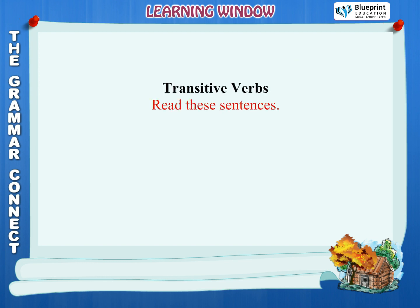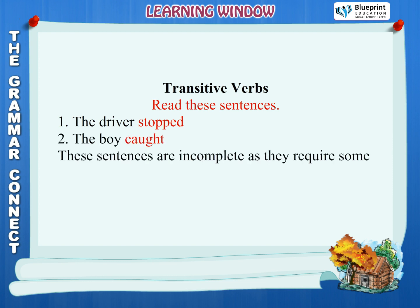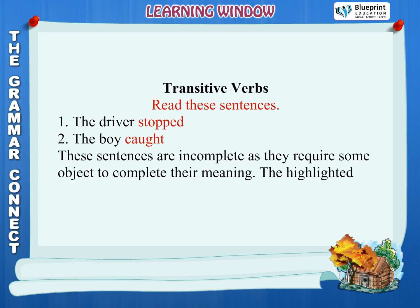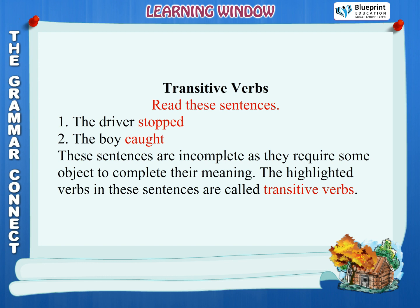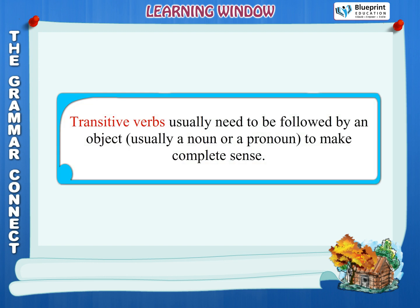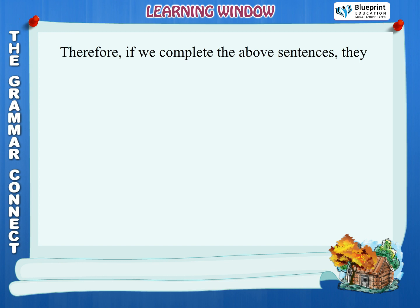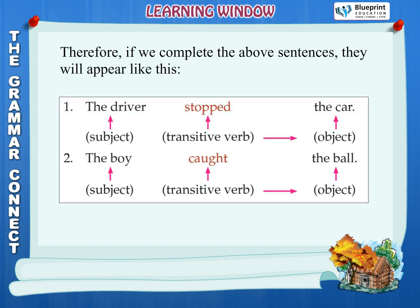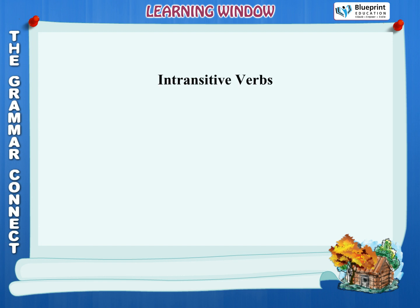Transitive verbs: Read these sentences — 1. The driver stopped. 2. The boy caught. These sentences are incomplete as they require some object to complete their meaning. The highlighted verbs in these sentences are called transitive verbs. Transitive verbs usually need to be followed by an object, usually a noun or a pronoun, to make complete sense. If we complete the above sentences: 1. The driver (subject) stopped (transitive verb) the car (object). 2. The boy (subject) caught (transitive verb) the ball (object).